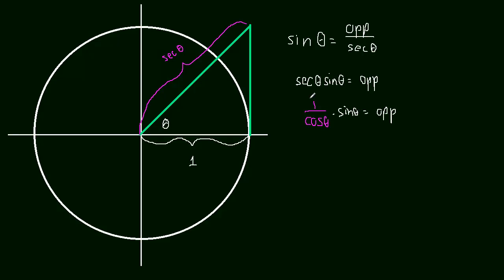So we just rewrote secant there. And this is, of course, sine theta over cosine theta equals the opposite side. And sine theta over cosine theta, we know that that's tangent theta. So the tangent theta is equal to that opposite side.